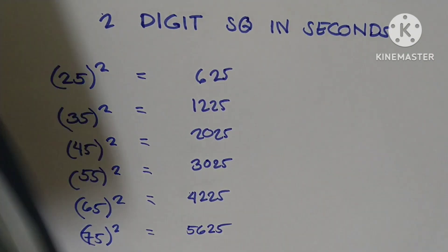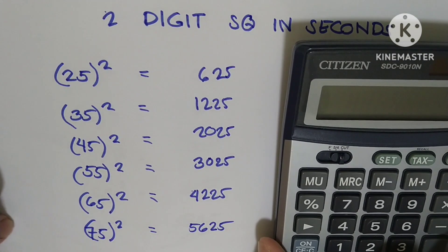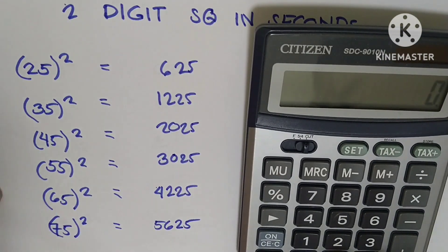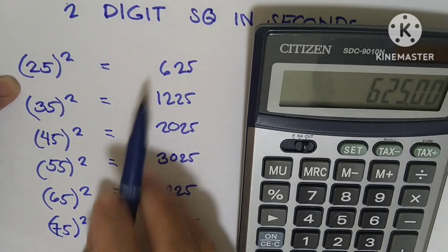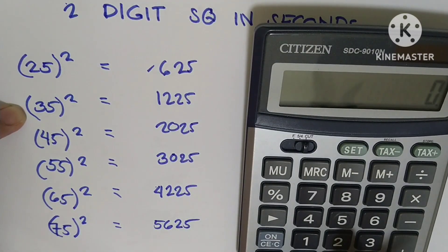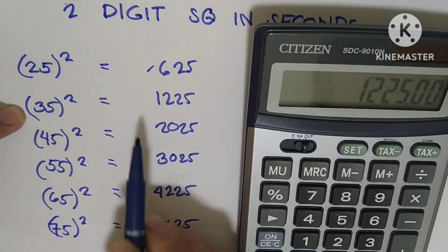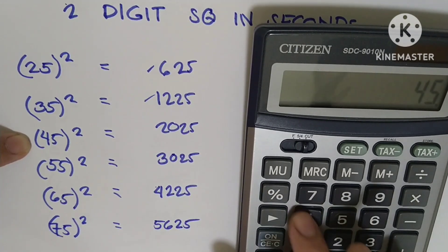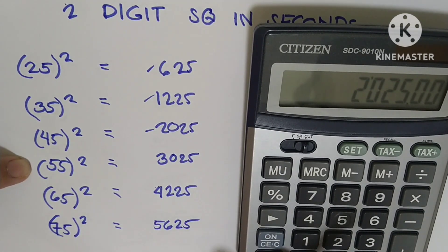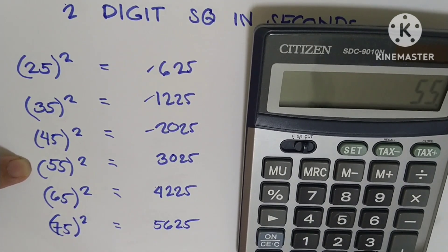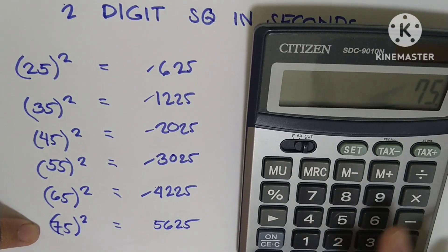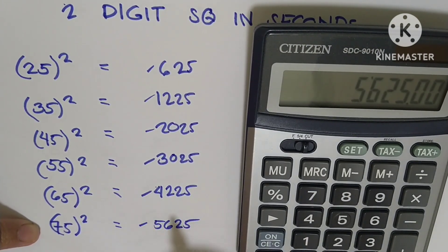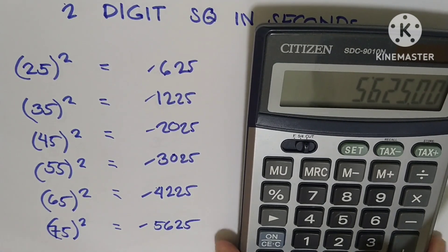Let's check if my answers are correct using the calculator. 25 to the power of 2, 25 times 25, correct, 625. 35 times 35 is 1225. 45 times 45 is 2025. 65 times 65 is 4225, and 75 times 75 equals 5625.